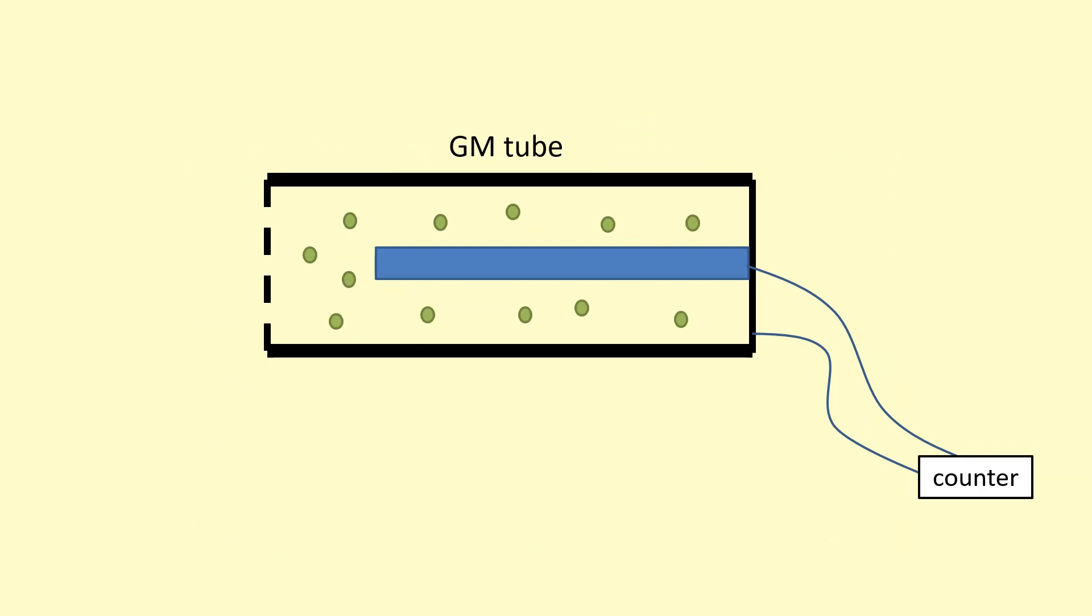This image shows the inside of a GM tube. You've got gas atoms inside it, and the walls are charged negative, and then you've got a rod in the middle which is positive.